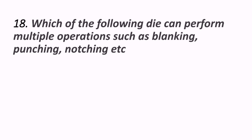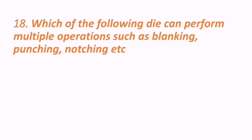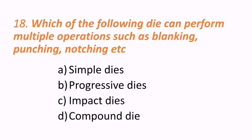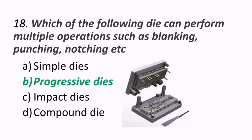Eighteenth question: which of the following dies can perform multiple operations such as blanking, punching, notching, etc.? Options are simple die, progressive die, impact die, and compound die. The correct answer is progressive die. B is the correct answer, as seen in the figure.